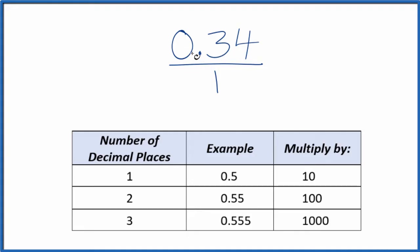What I need to do is get this 0.34 to be a whole number, and I have two decimal places. So with two decimal places, if I multiply 100 times 0.34, I'll get a whole number. So 100 times 0.34, that equals 34. There's our whole number.